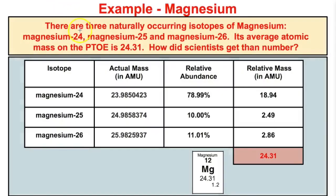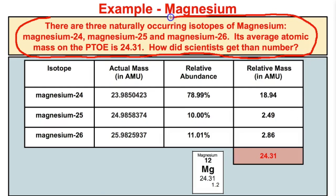Let's take a look at an example — let's look at magnesium. There are three naturally occurring isotopes of magnesium: magnesium-24, magnesium-25, and magnesium-26. Its average atomic mass on the periodic table of elements is 24.31. If we look at this little box right here, the average atomic mass for magnesium is 24.31. But how did scientists get that number?